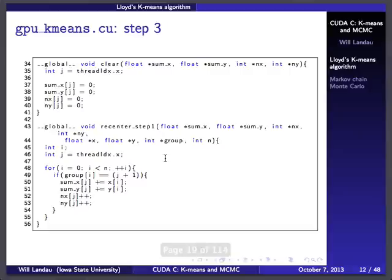Step three: recomputing the cluster mean. Once I've reassigned the points, I do that in two kernels. I take the mean of the points within each cluster in both x and y directions. Actually I split this into three kernels. The first kernel keeps track of the sums of points in each cluster and the number of points in each cluster. nx and ny are the number of points in each cluster center — they're not different in x and y, but I keep two copies anyway.